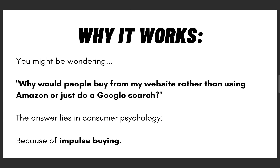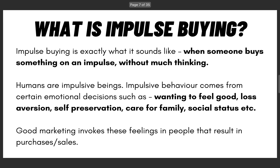Now this is probably the most asked question: why would people buy from me rather than using Amazon or just doing a Google search? Amazon has billions of products and can ship really quickly — they're probably cheaper too. The answer lies in consumer psychology. It's called impulse buying — when somebody buys something on an impulse without much thinking. We're impulsive beings; our actions are rooted in emotions. Common triggers include wanting to feel good, loss aversion, caring for your family, and societal status. Good marketing means invoking these feelings in someone so they purchase from you.